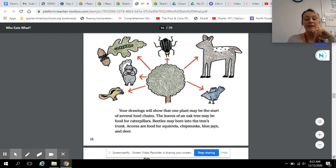Your drawings will show that one plant may be the start of several food chains. The leaves of an oak tree may be food for caterpillars. Beetles may bore into the tree's trunks. Acorns are food for squirrels, chipmunks, blue jays, and deer.